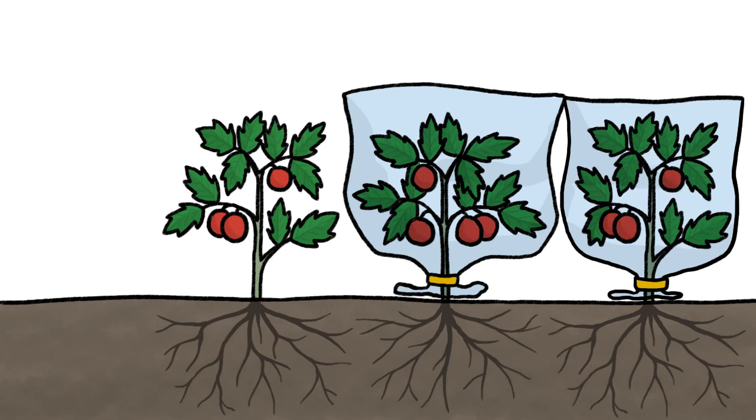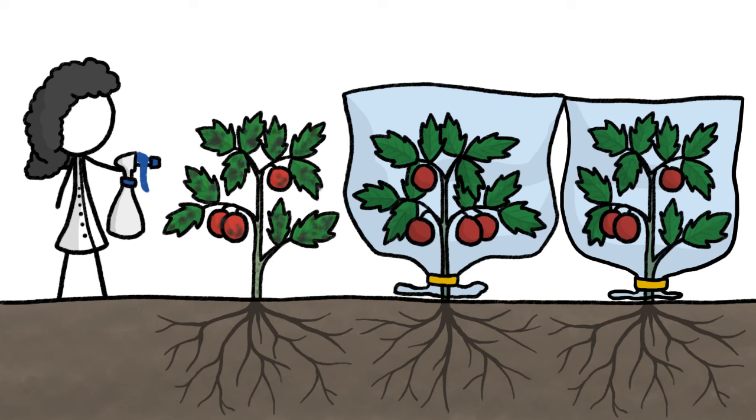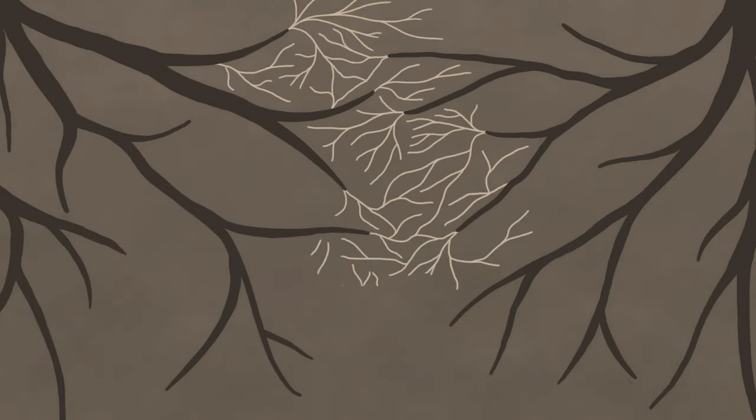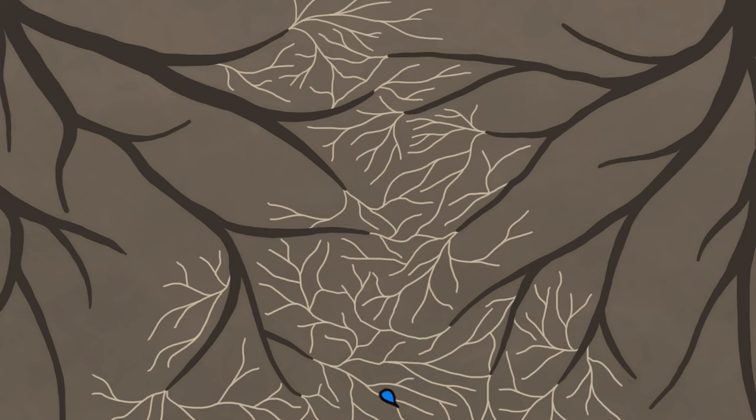If you seal the tops of tomato plants in airtight plastic bags and expose one of them to a harmful leaf disease, the healthy plants will detect their neighbor's illness and begin making antibiotic compounds. We don't know exactly how this communication happens, but it's probably through the extensive network of beneficial fungi that help plant roots absorb and share water and nutrients.